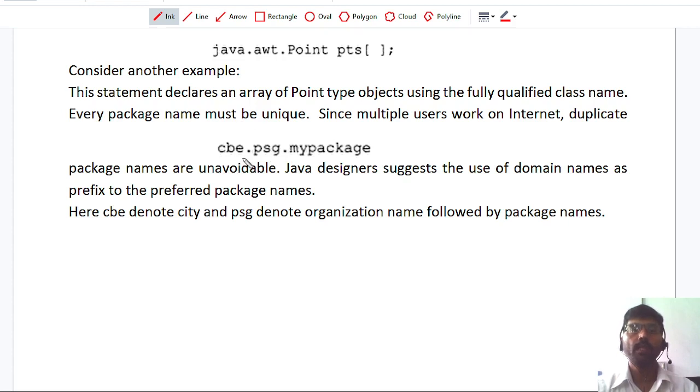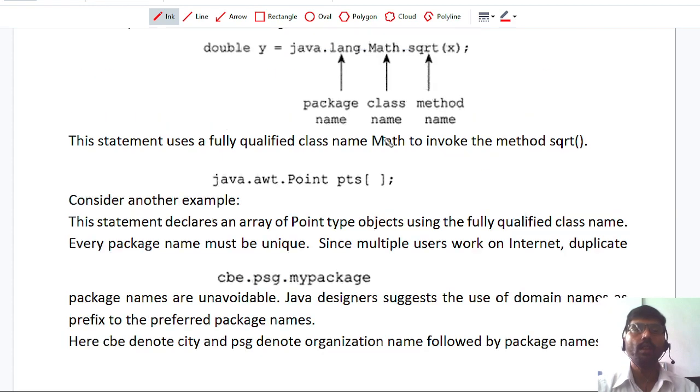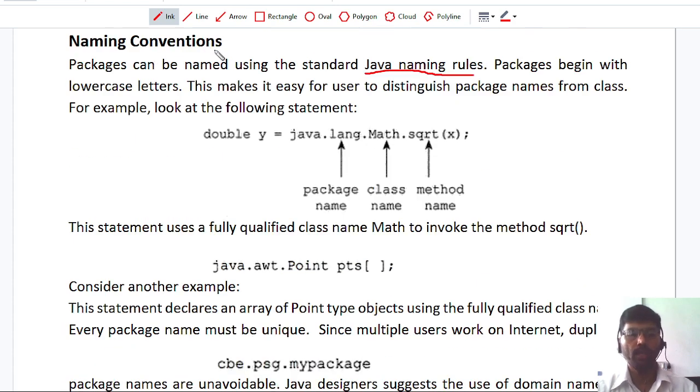Now, the first one is the city name, the second one is my organization name, then I have put my package. So this is never be duplicated in the internet because domains are never duplicated in internet. So this is the solution given by the developer of the Java program. This is called as naming convention.